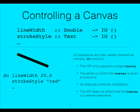Let's take an example of something we want to do: let's try and control a canvas, or more specifically a remote canvas. Because if we're inside a Haskell box, inside the runtime system, the screen is a remote thing. We could have IO functions like line width and stroke style, but the problem is that when they're IO, we can only have one single canvas or have different versions of line width. The ability to control the canvas means anyone can write it. There's no enforced behaviors, you have to remember to initialize them, and the API doesn't reflect the fact that this is remote.